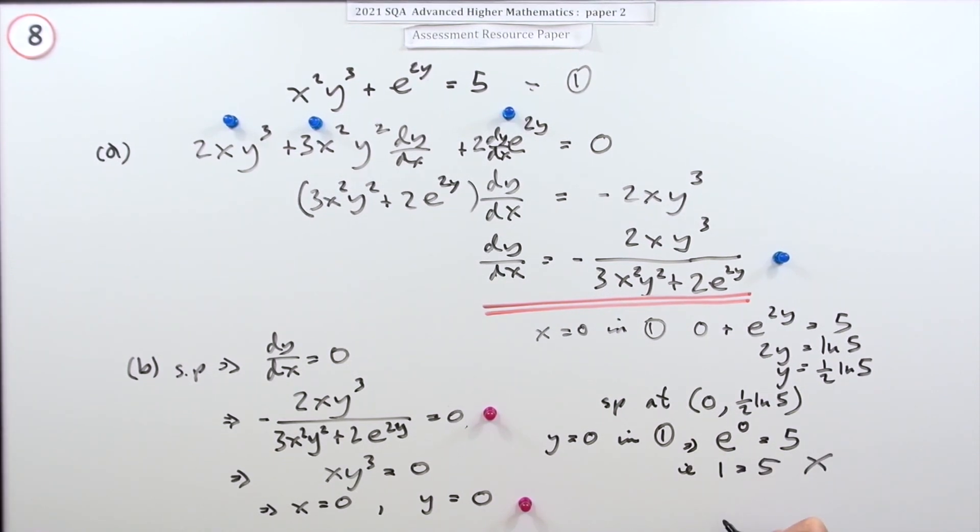Well that's inconsistent, which means there's no solution there. Which then means there's only one stationary point at x equals zero, for that mark.